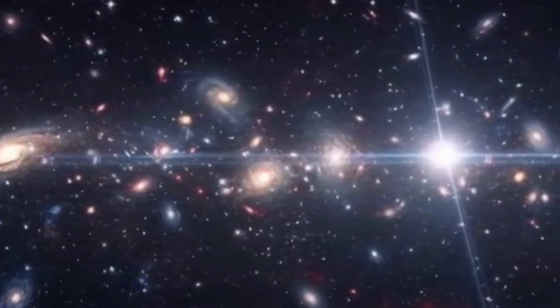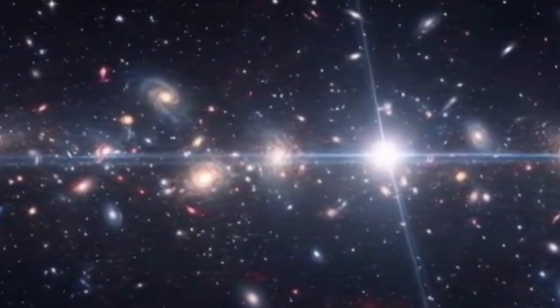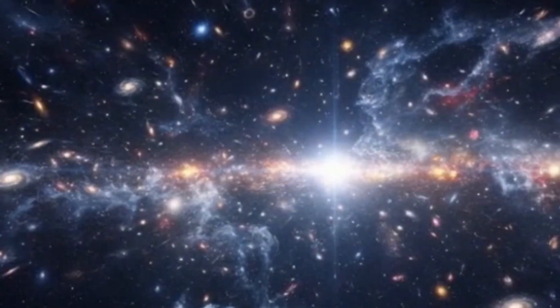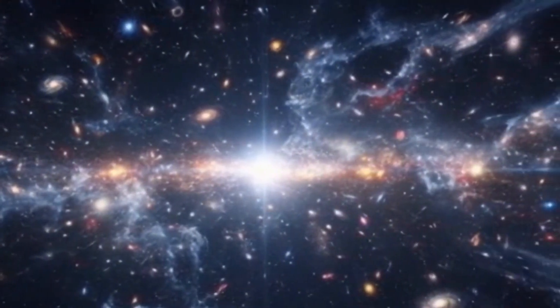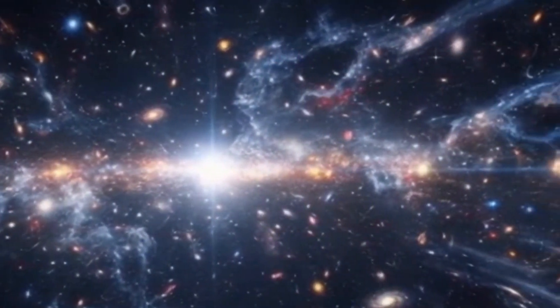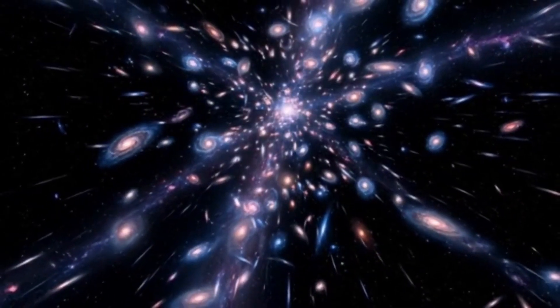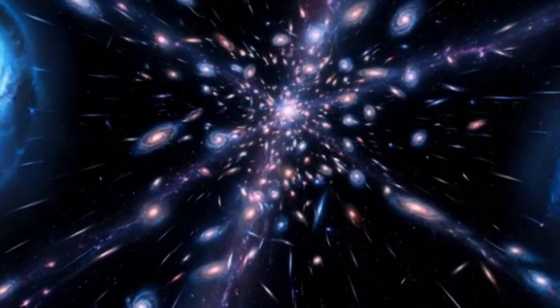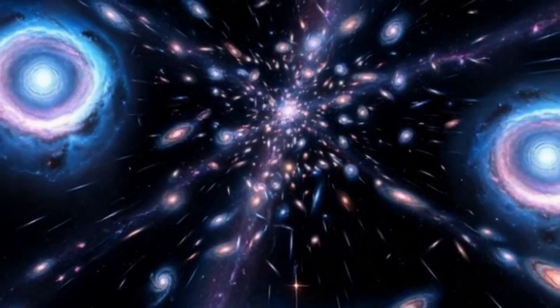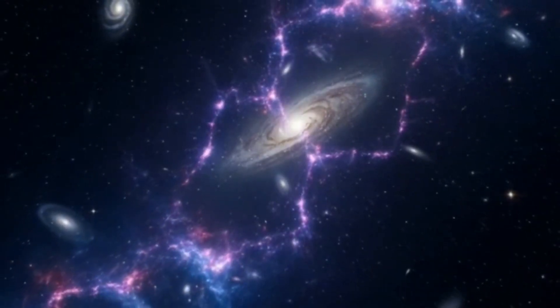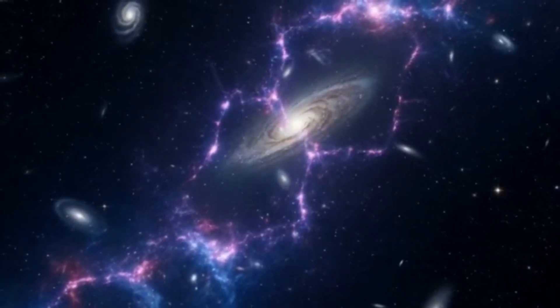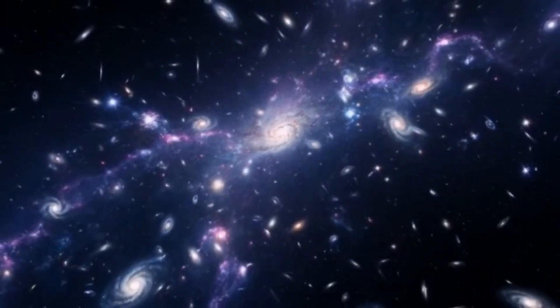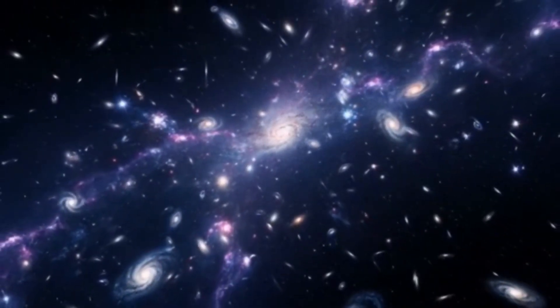But here's where it gets even more astonishing. There are new galaxy candidates that may sit at redshifts as high as 16. If confirmed, these objects would shake the very foundations of modern cosmology, rewriting what we thought we knew about how the universe formed and evolved. Now, spectroscopic confirmation is still pending for these extreme cases, but the deeper the James Webb Space Telescope looks, the stranger and more crowded the early universe becomes.